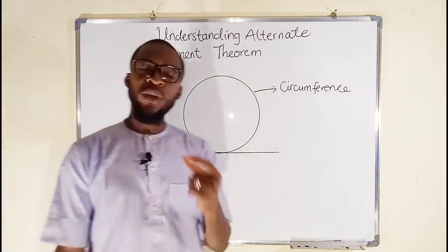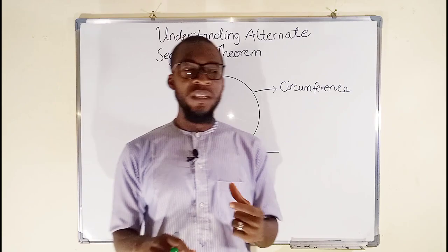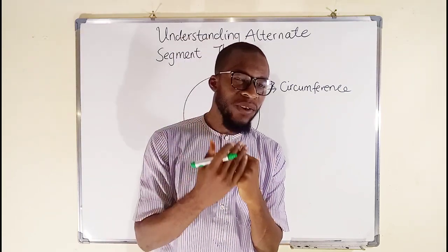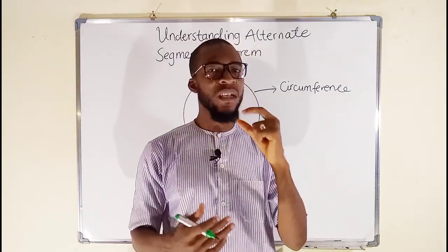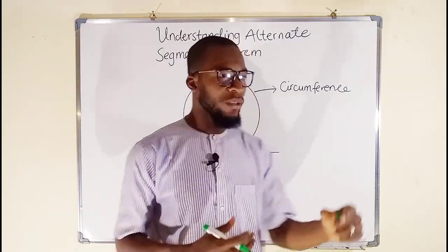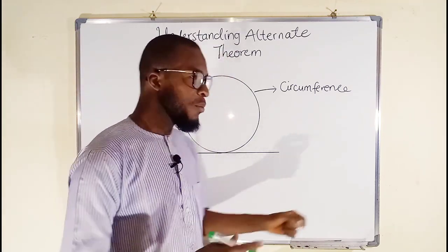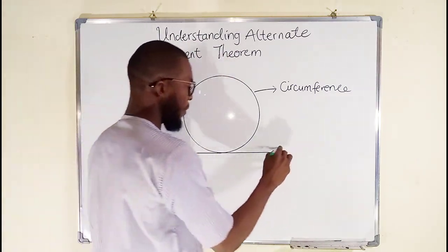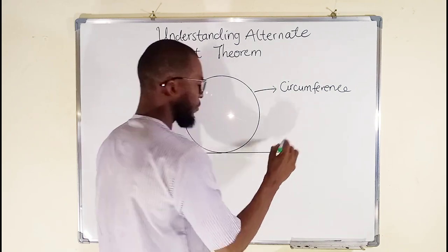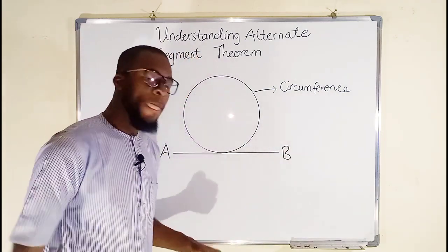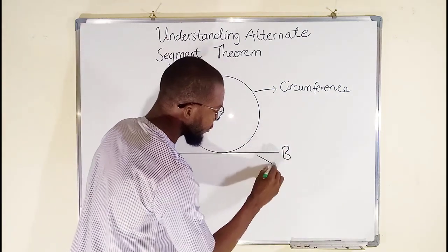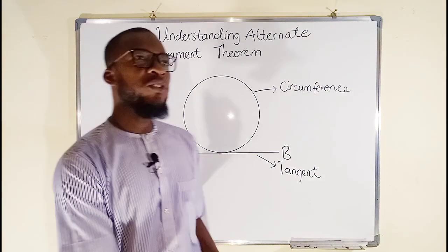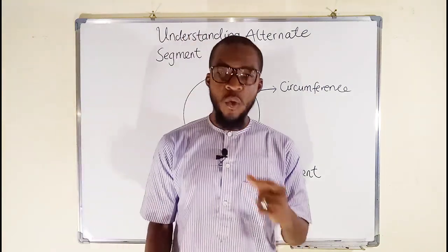We also need a tangent. A tangent is any line that touches the circumference at exactly one point. So this is a tangent — let me label it as AB. And this is a tangent.